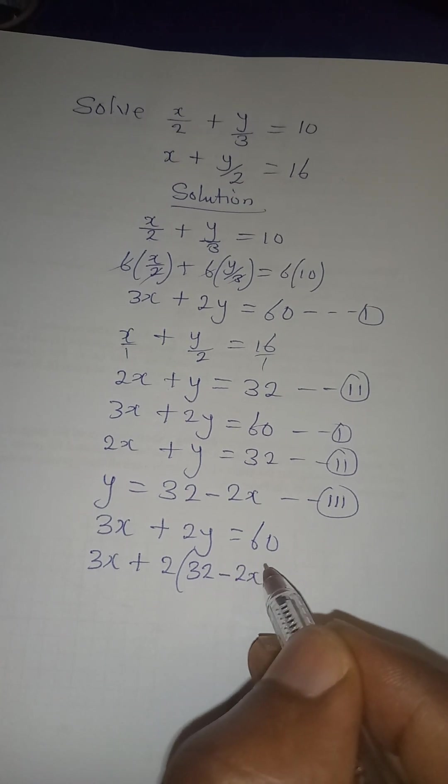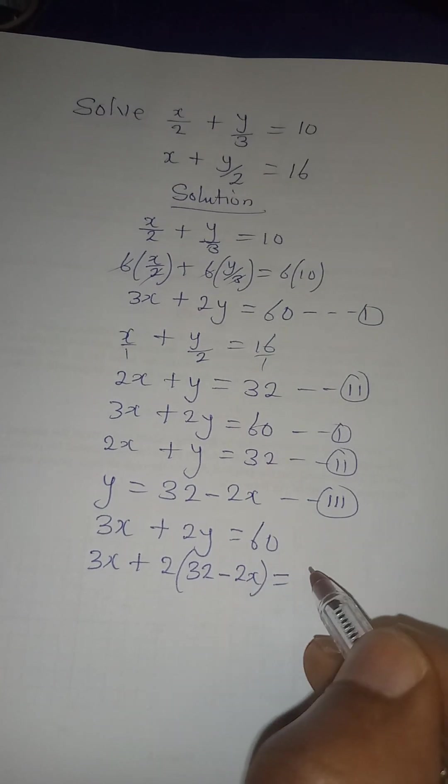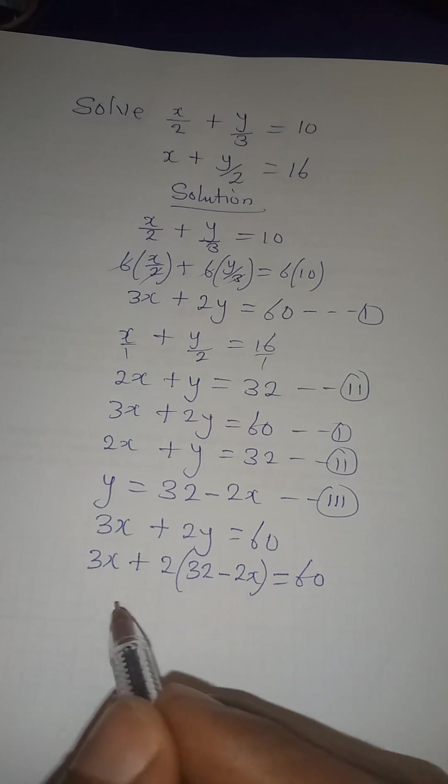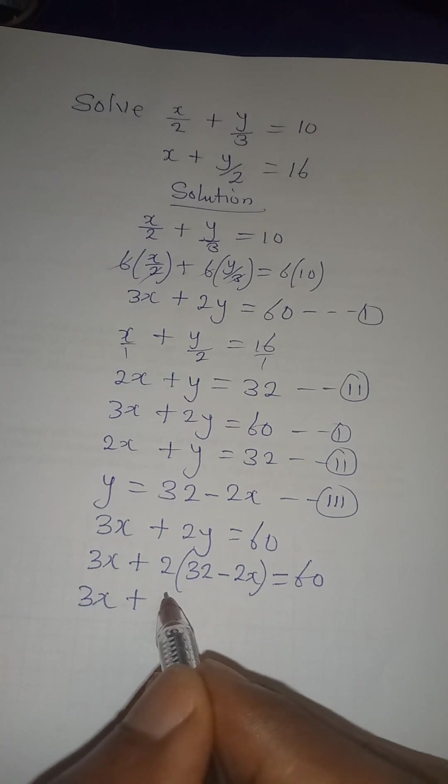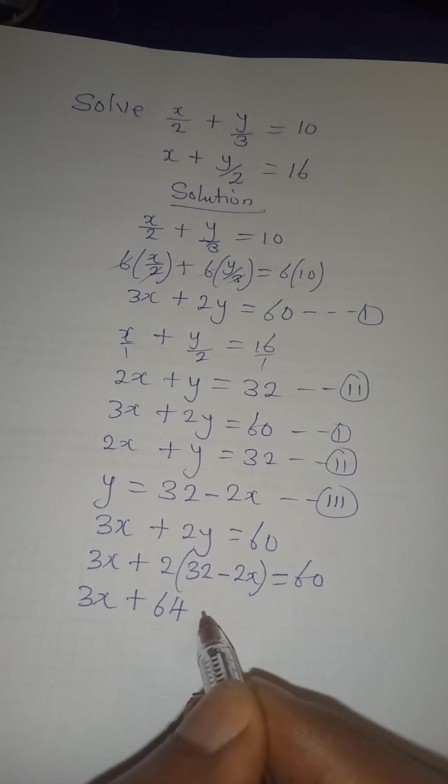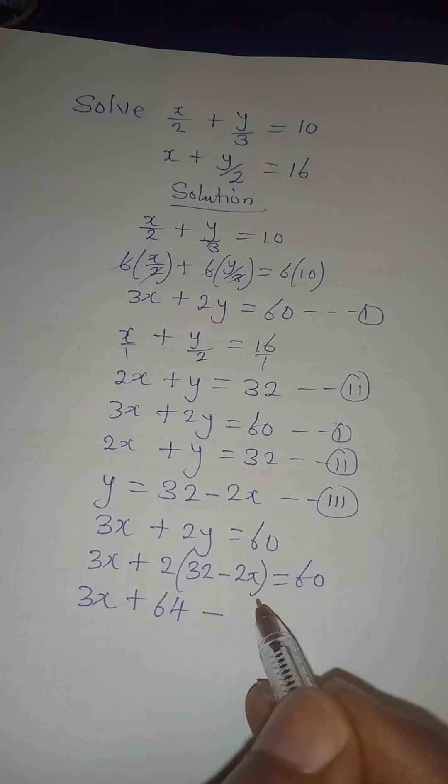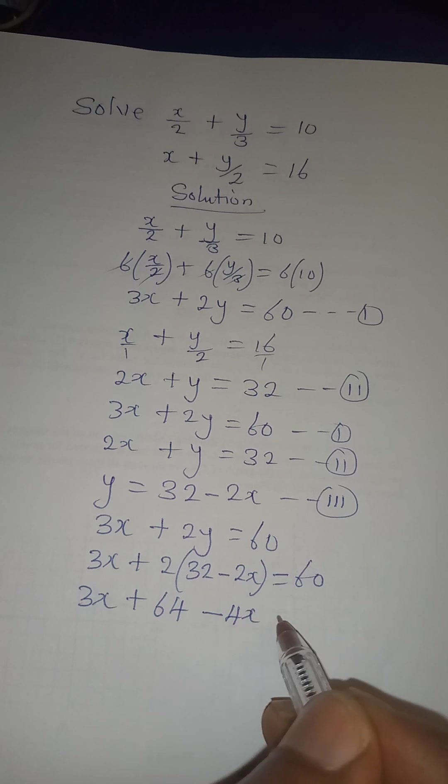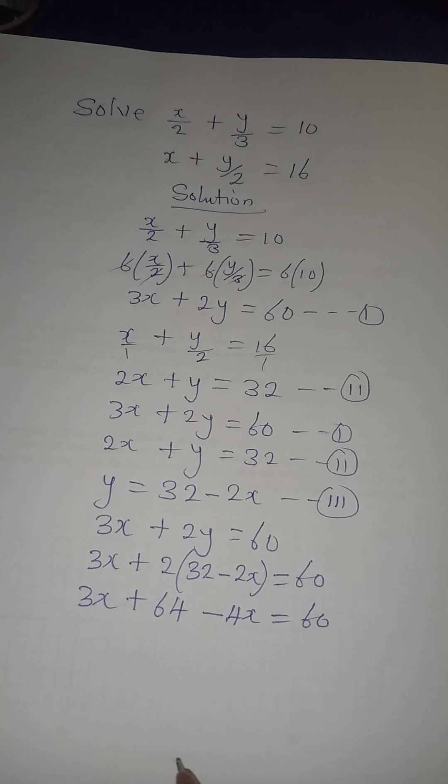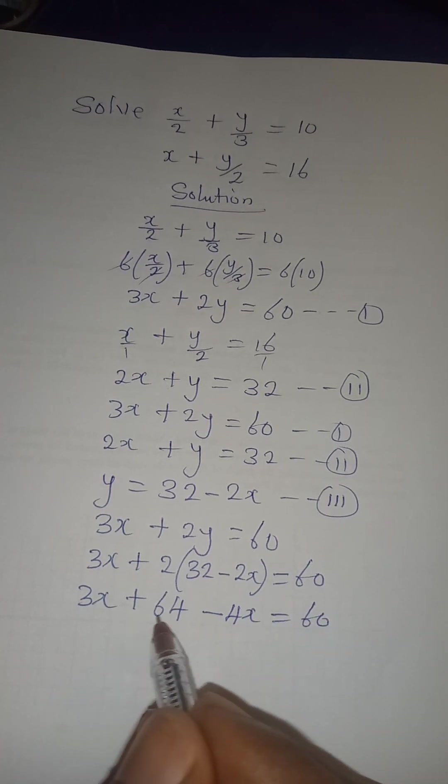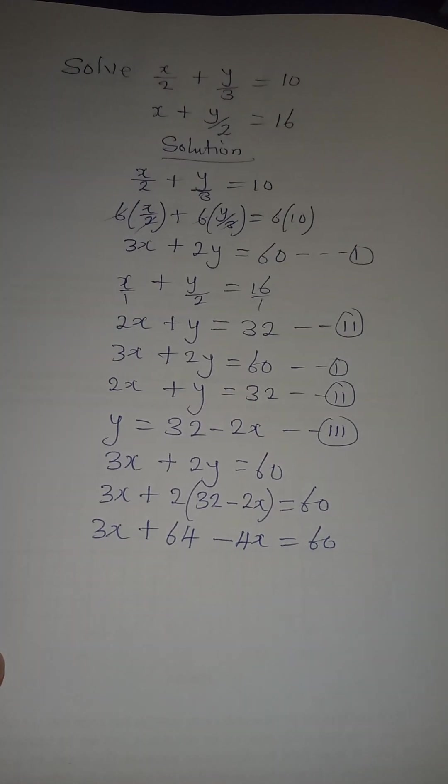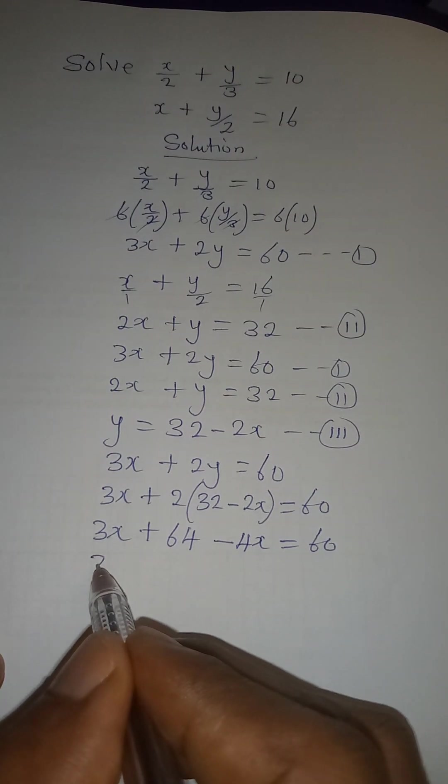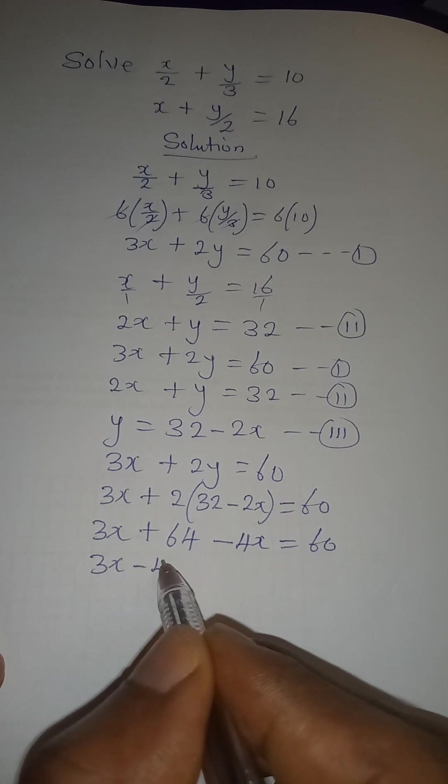Let's open the bracket. It will be 3x plus 64 minus 2 times 2x, that will be minus 4x, everything equal to 60. And from here, I will collect like terms. Remember I'm using substitution method, so it will be 3x minus 4x.